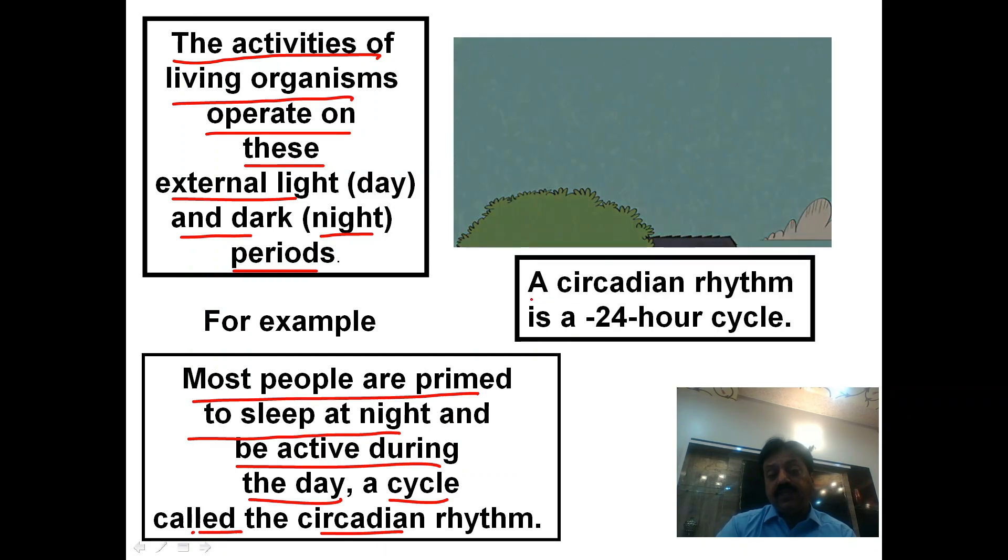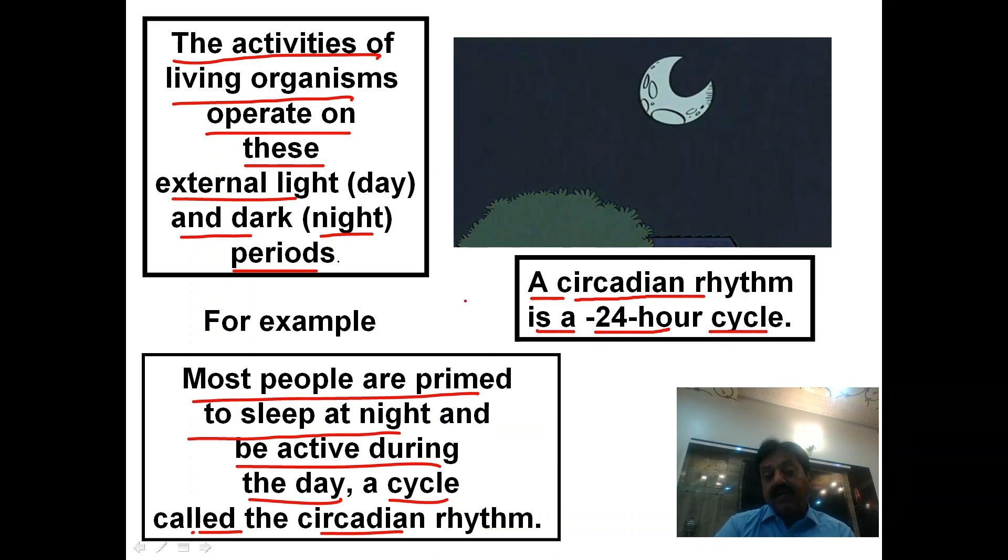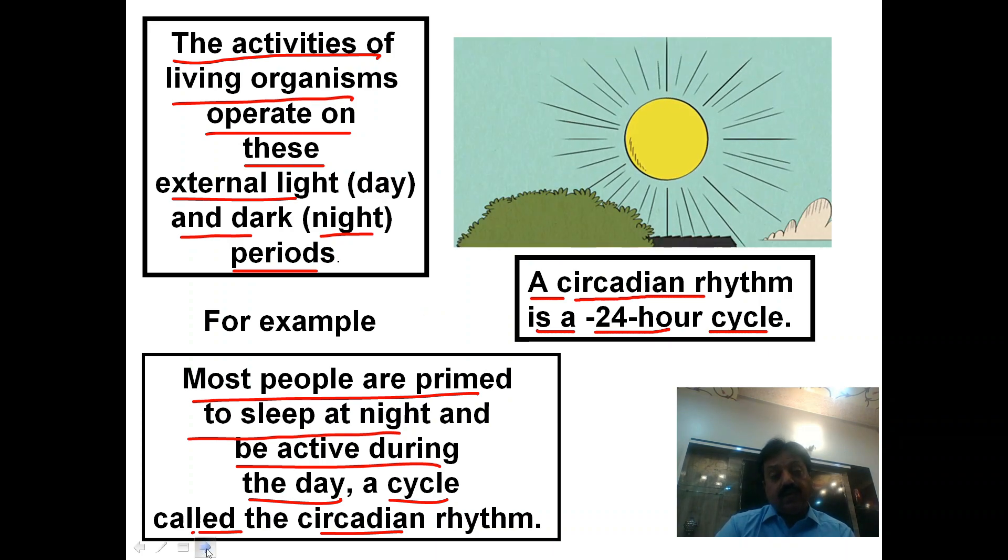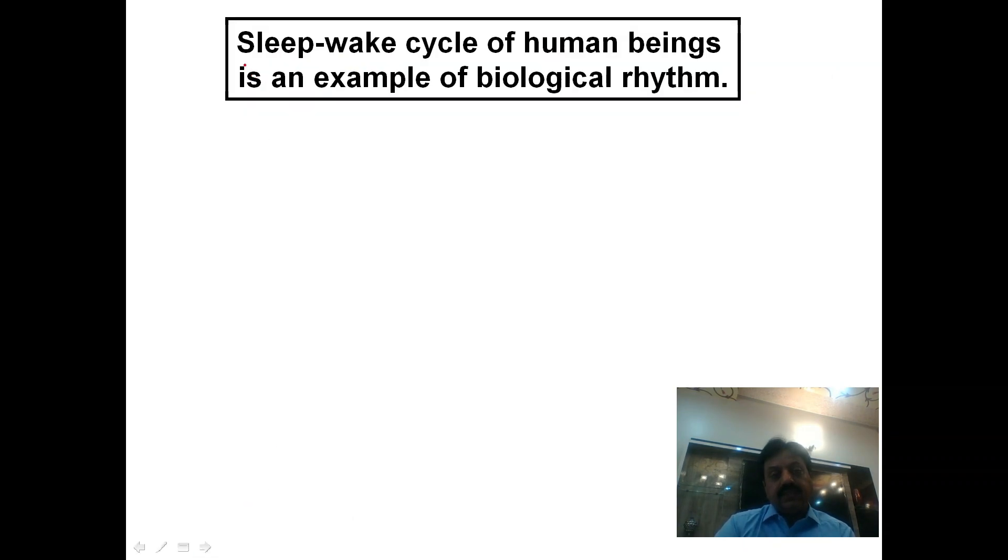A circadian rhythm is a 24-hour cycle that repeats every 24 hours. The sleep and wake cycle of human beings is an example of biological rhythm controlled by the hypothalamus, specifically the suprachiasmatic nucleus.